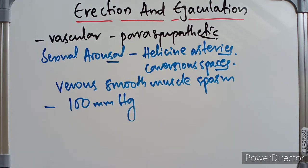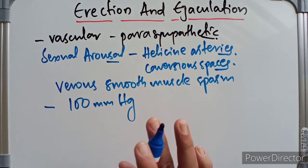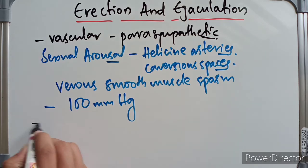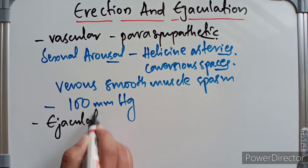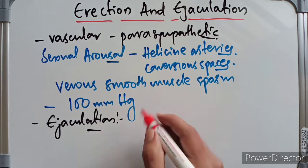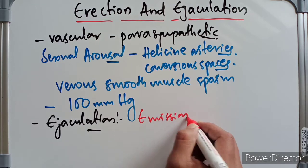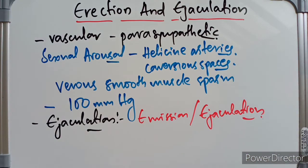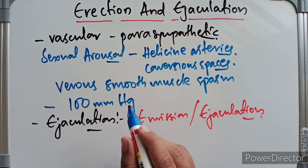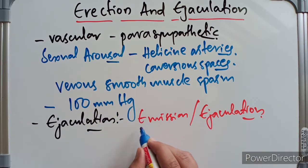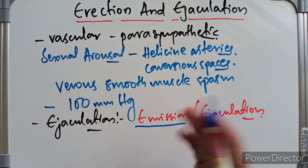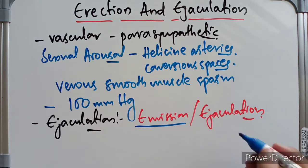Ejaculation has two processes: emission and ejaculation. Emission is the first part — it is the transmission of seminal fluid from the vas deferens or seminal vesicles. Ejaculation is the onward transmission of the seminal fluid from the prostatic urethra to the exterior.